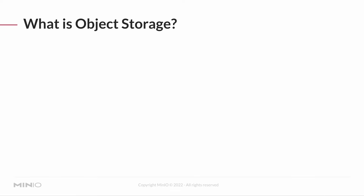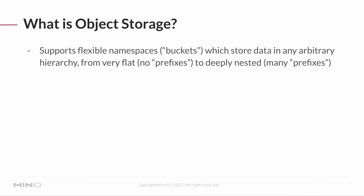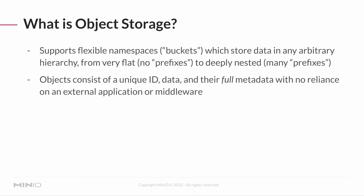So we've talked about objects and buckets — what is object storage? Object storage supports flexible namespaces, which are our buckets, and uses a globally unique DNS. Data can be stored in any arbitrary hierarchy, from very flat — meaning no prefixes — to deeply nested, meaning many prefixes. You can think of a prefix as basically a directory in your volume. Your objects consist of a unique ID, some data, and full metadata, without having to rely on any external application or middleware. Your object is a full atomic piece of data that you can work with in any way you like.